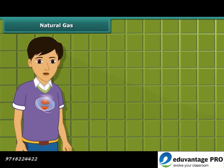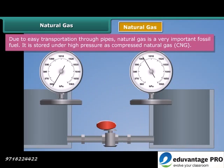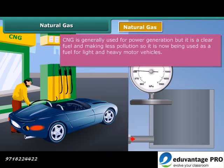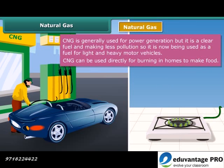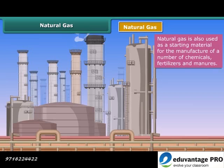Now let's move on to our next exhaustible natural resource — natural gas, also known as compressed natural gas or CNG. It is stored under high pressure as CNG. CNG is generally used for power generation, but due to being less polluting, it is also being used as a fuel for vehicles and for cooking purposes. Natural gas is also used as a base material for the manufacture of a number of chemicals and fertilizers.